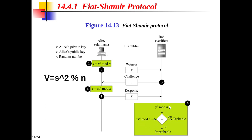In the last step, Bob calculates y² and xv^c. If both are congruent, then Alice knows the value of s, either by honesty or dishonesty. You can verify this by substituting: y² = (r × s^c)², and by substituting all values we finally get y² ≡ xv^c mod n. That is why we check this congruence — if both are congruent then authentication is probable; otherwise it is not.